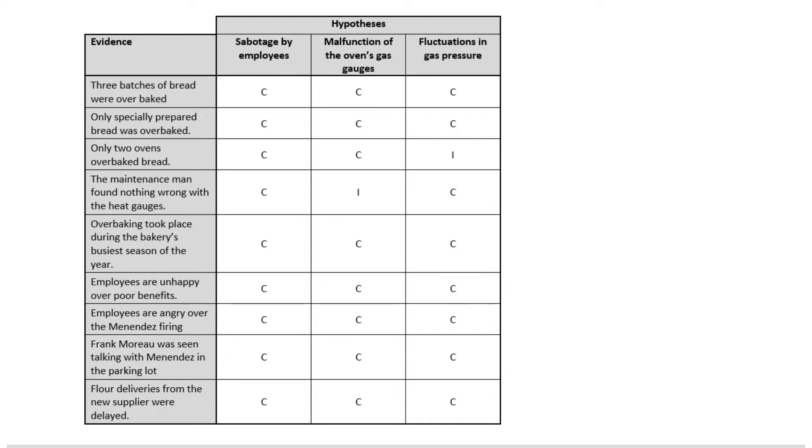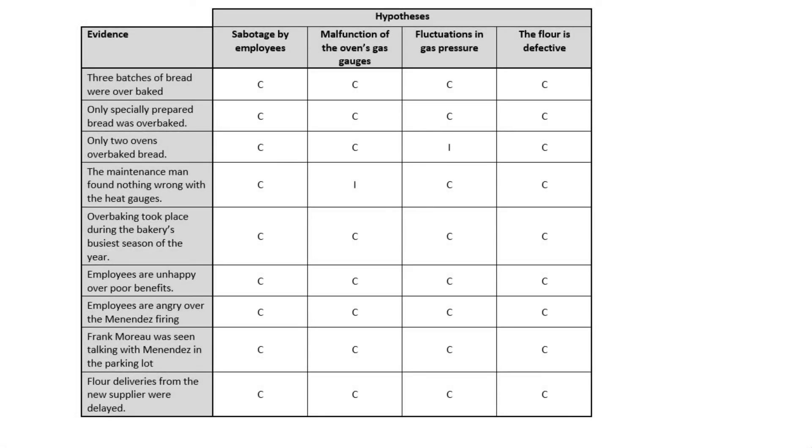But in the process of going through this, we might also want to refine our hypotheses or refine our evidence matrix and maybe add in additional information when we start asking different questions. One of the questions that might pop up is with that last piece of evidence that flour deliveries from new suppliers were delayed. Maybe something was going on with the flour, that it was a little bit different than the flour that had been used before, maybe the flour itself is defective.